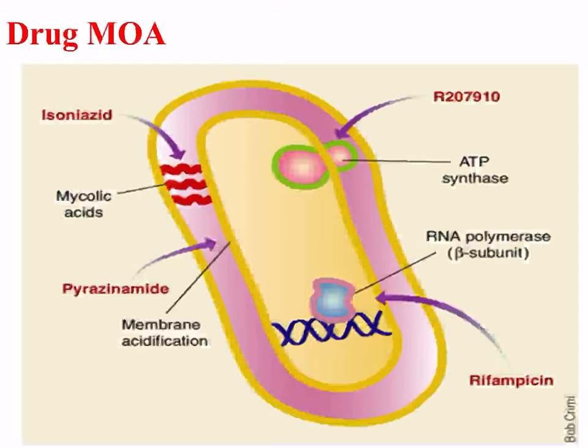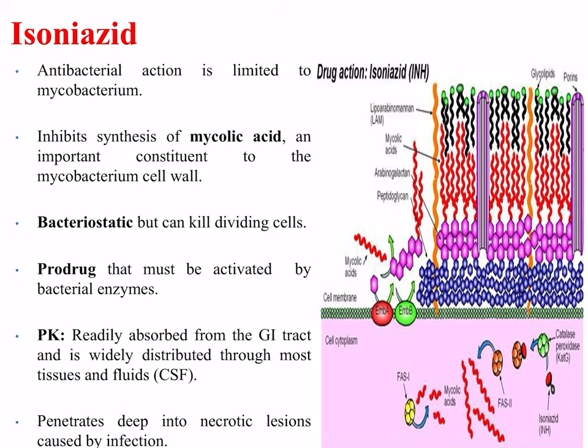The diagram on this slide shows a mycobacterial cell and the points at which individual drugs act, including isoniazid, pyrazinamide, and rifampicin. Isoniazid's anti-mycobacterial action is limited to mycobacterium; it inhibits synthesis of mycolic acid, an important constituent of the mycobacterial cell wall, which is distinct from peptidoglycan found in bacteria. It is bacteriostatic but can kill dividing cells. It is a pro-drug that must be activated by bacterial enzymes. It is readily absorbed from the gastrointestinal tract and widely distributed through most tissues and fluids, including the cerebrospinal fluid, and penetrates deep into necrotic lesions.